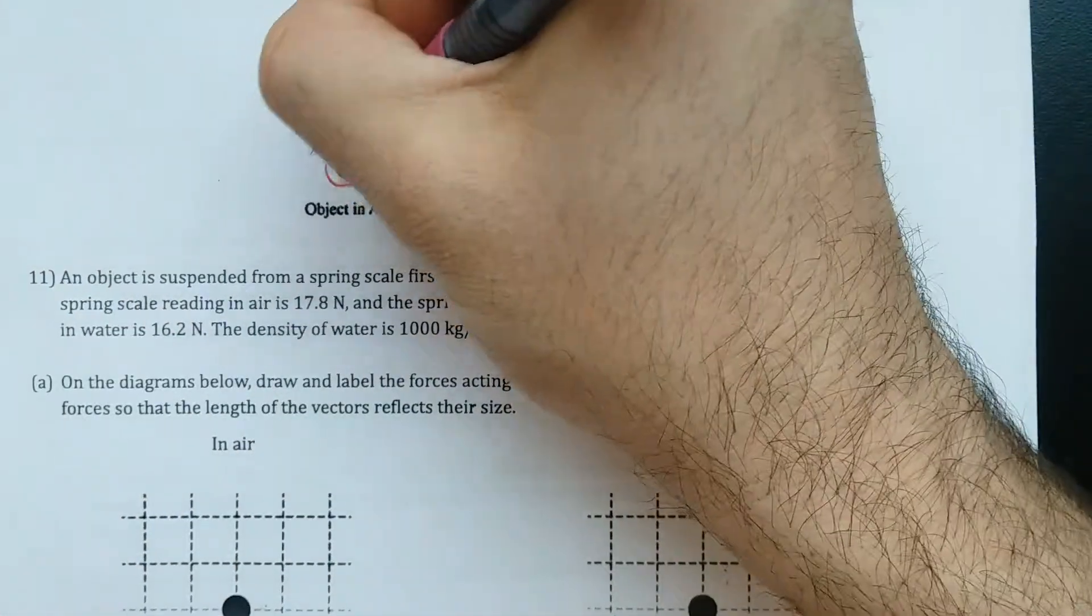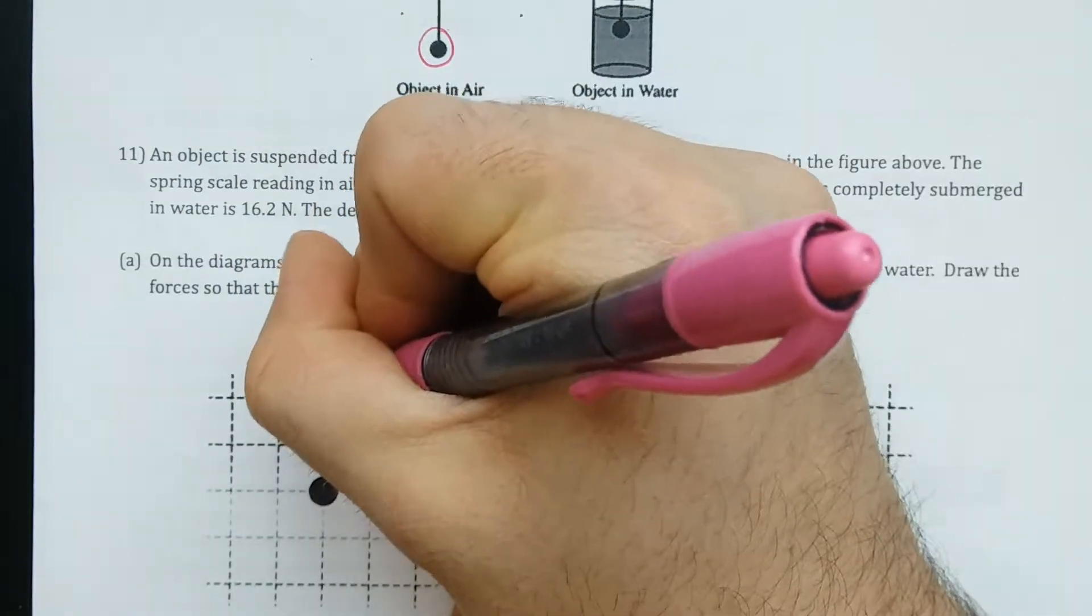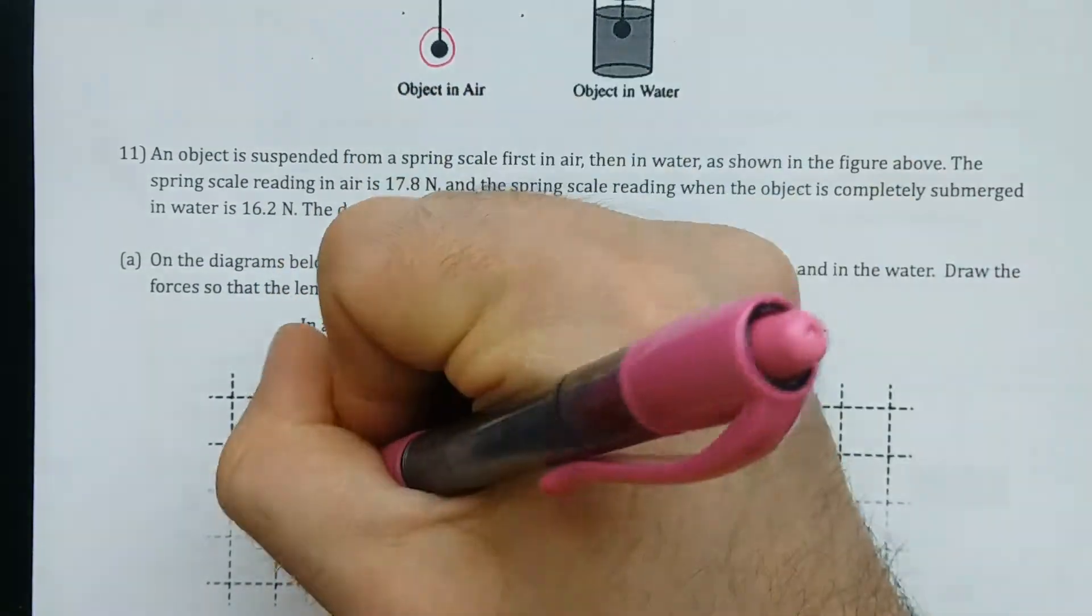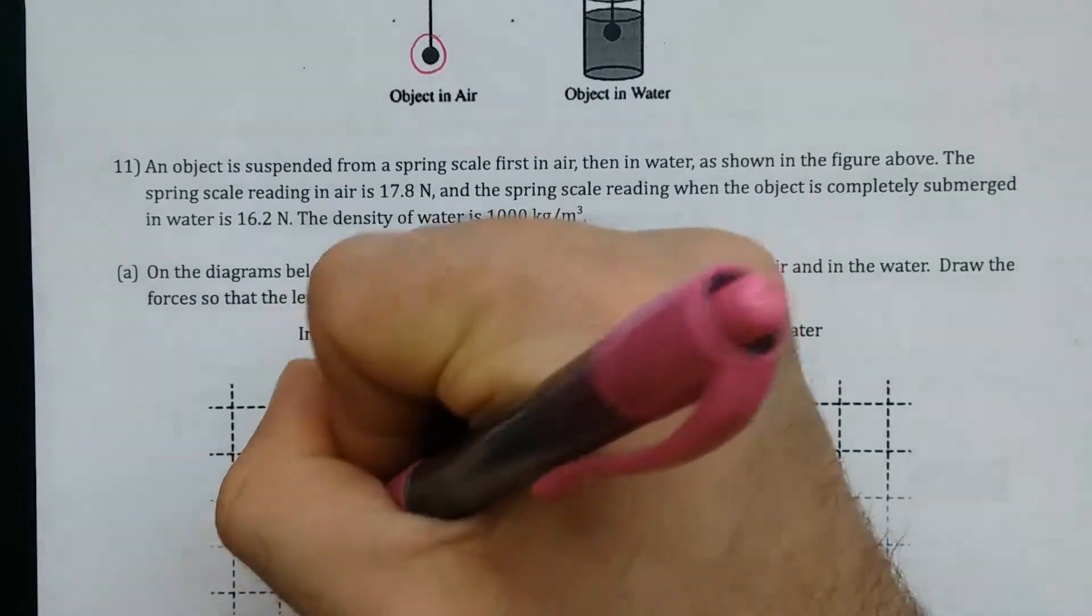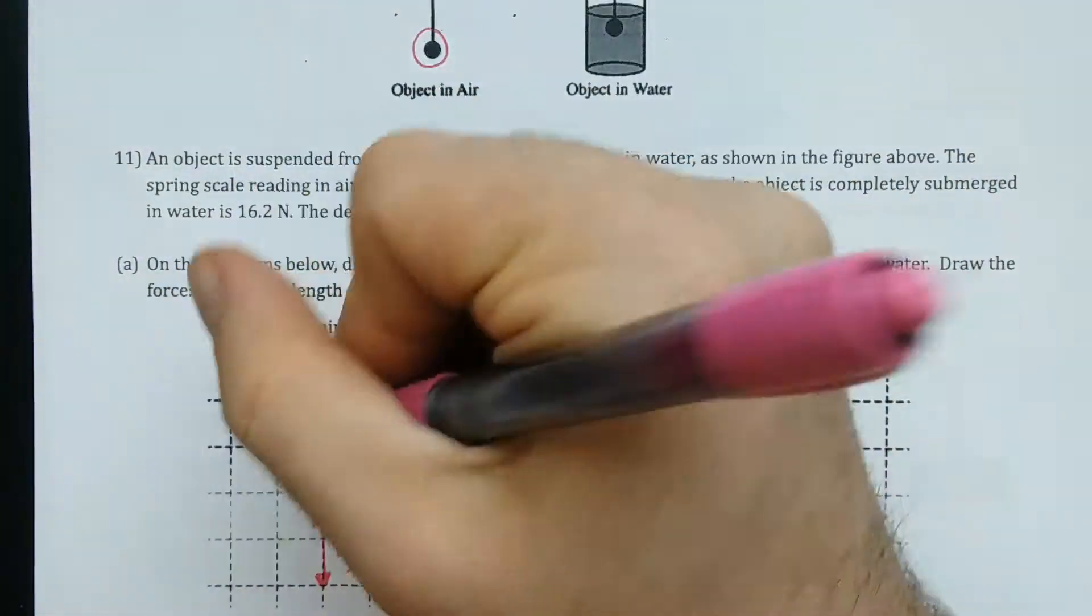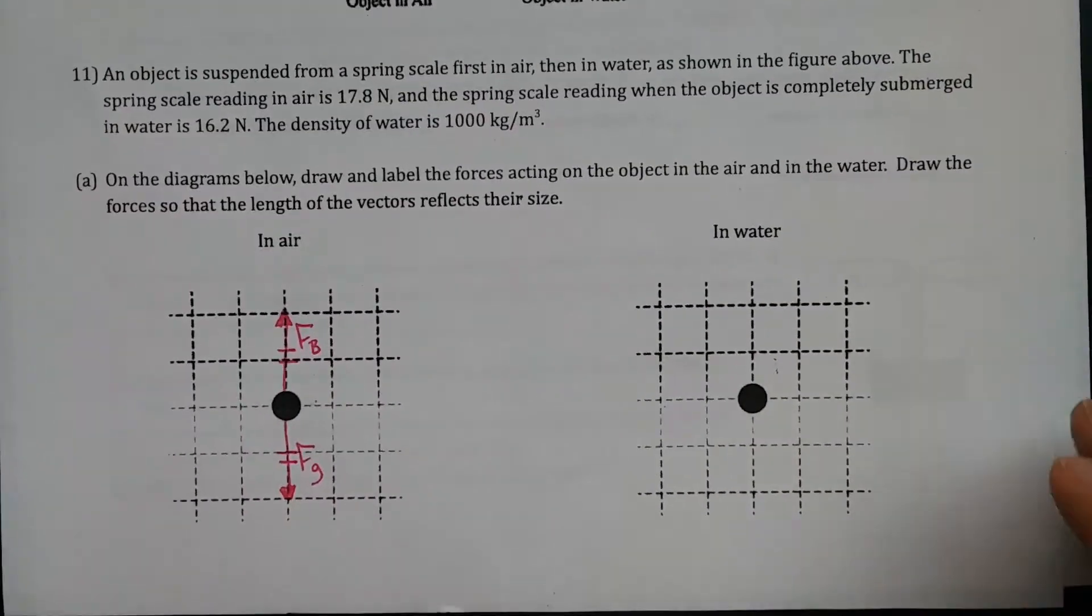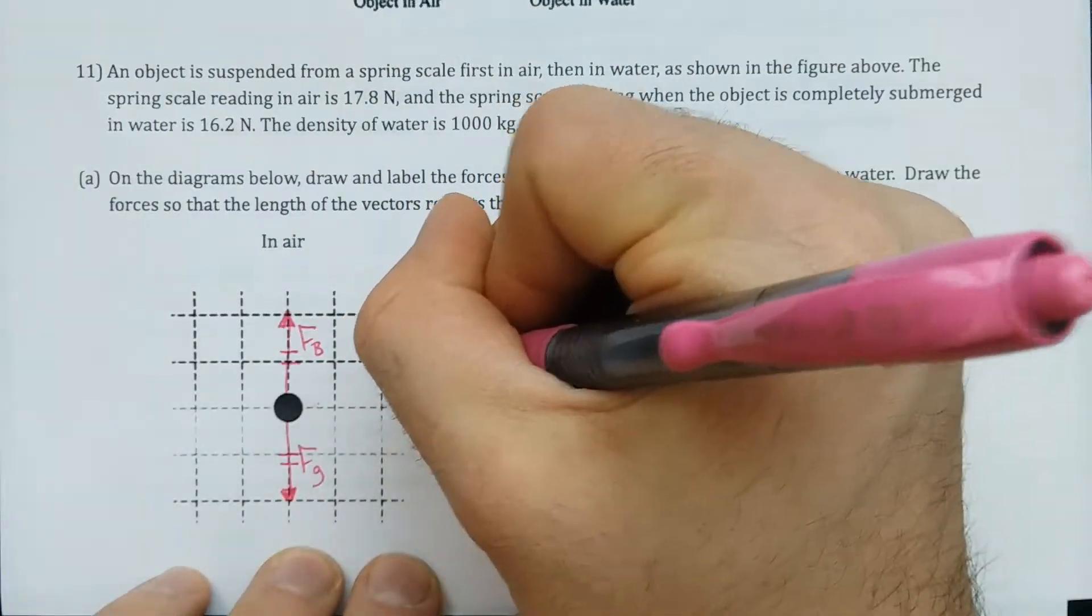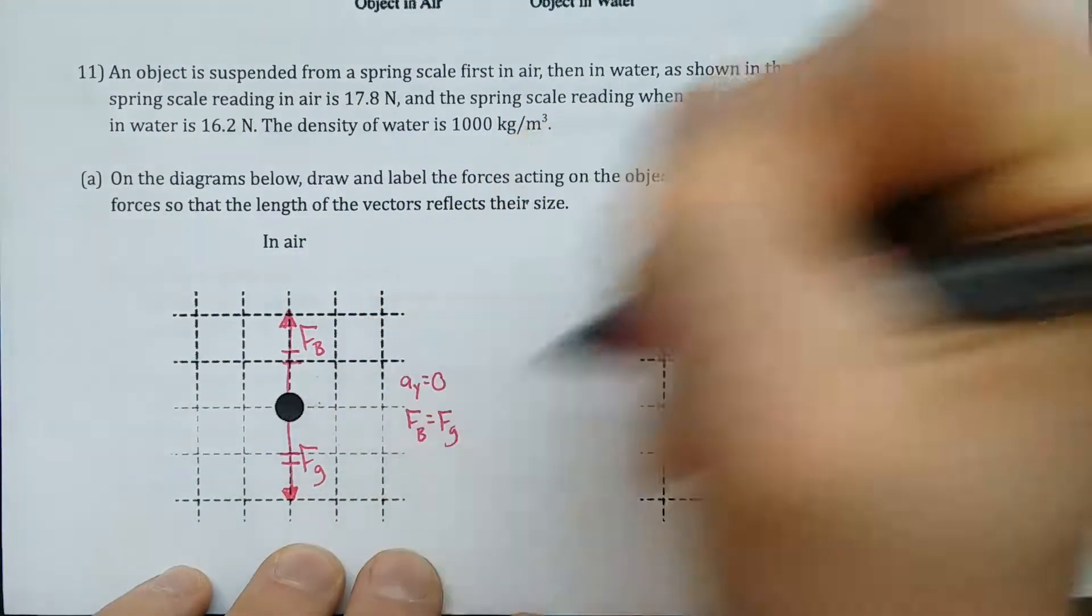Looking at all the forces that are acting on this object, you've got a buoyant force up and what has to be the same size, force of gravity down. Those must be balanced forces right there. This object is not accelerating. Ay equals zero. So Fb equals force of gravity.